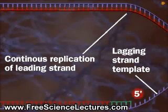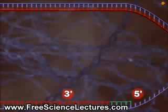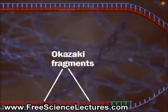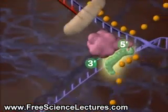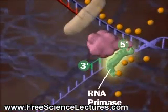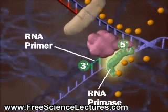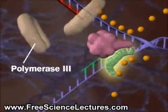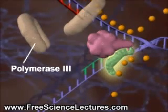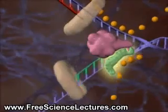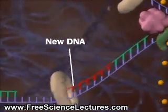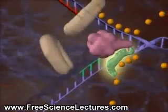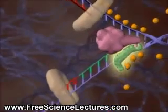The lagging strand has to form from 5' to 3' too. It forms in pieces called Okazaki fragments. First, an RNA primase lays down an RNA primer. Then, DNA polymerase 3 lays down new DNA. The process repeats again and again.